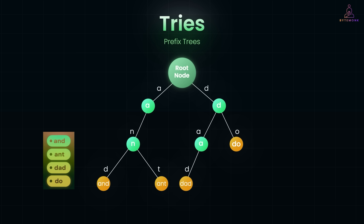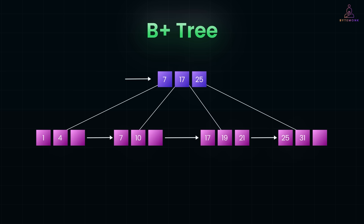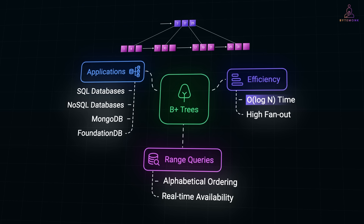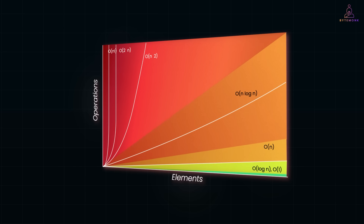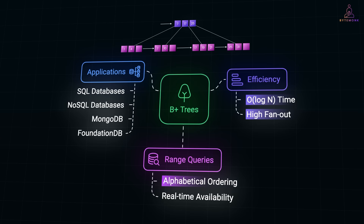Now, while tries are great for prefix-based lookups and autocomplete, when it comes to storing and searching large sorted datasets, especially in traditional databases, another powerful structure comes into play: the B+ tree. B+ trees and their close cousin B trees are widely used in relational databases to index fields like usernames. These structures keep keys sorted and allow efficient lookups in O(log N) time. So even with a billion usernames, finding one might take around only 30 steps, thanks to their high fanout — meaning each node can store hundreds of keys, keeping the tree shallow. In real-world scenarios, you can often search millions of entries with just three to four disk or memory reads. B+ trees also support range queries, like finding the next available username alphabetically — something that hash maps and bloom filters can't do. That makes them ideal for scenarios where ordering matters.